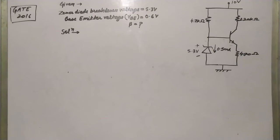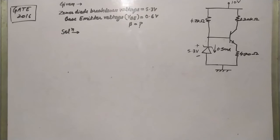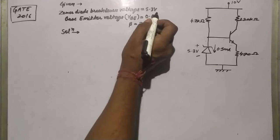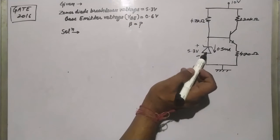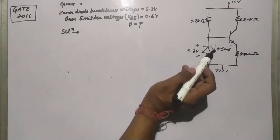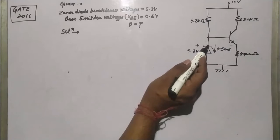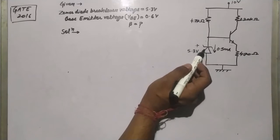Hello everyone, today we will discuss a GATE 2016 question based on BJT. In this question, it is given that the Zener diode breakdown voltage is equal to 5.3 volts. So we are using a Zener diode in this circuit.